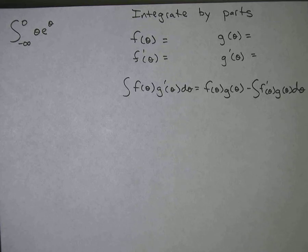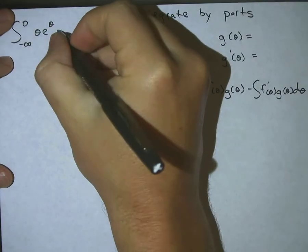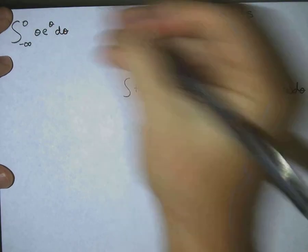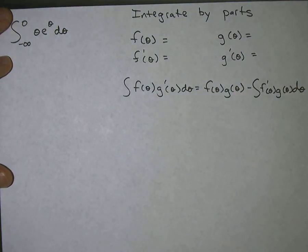What we have here is an improper integral: the integral from negative infinity to zero of theta times e to the theta, d theta. We're going to integrate this by parts.